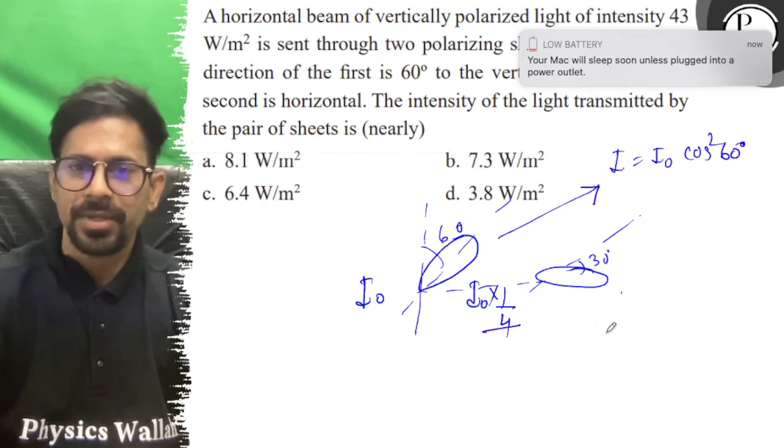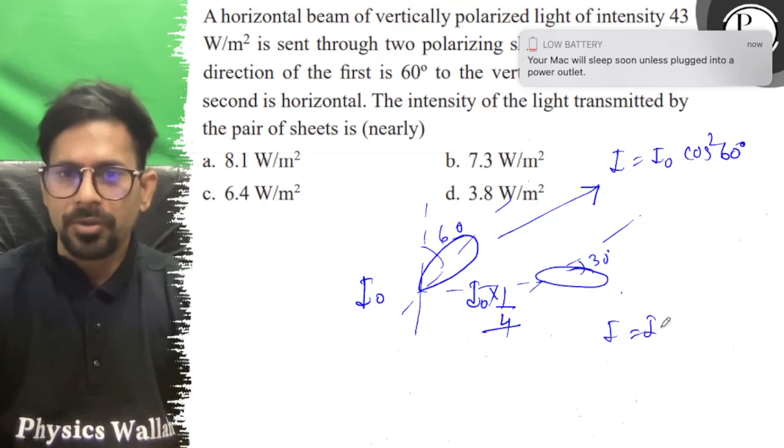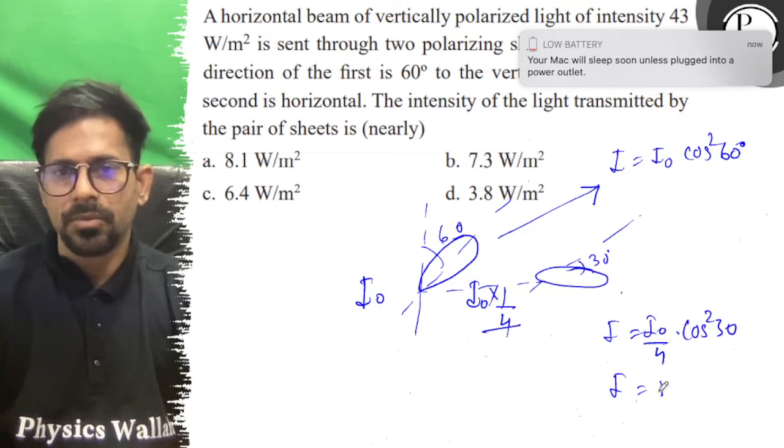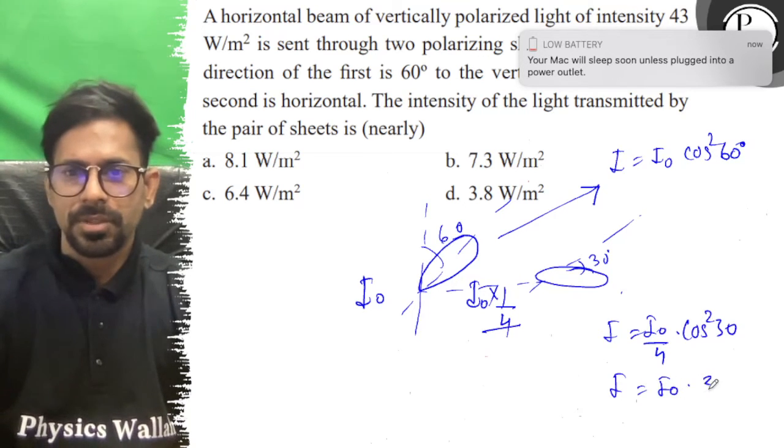Then through the second polarizer, this equals I₀/4 × cos² 30°, which equals I₀ × 3/4.